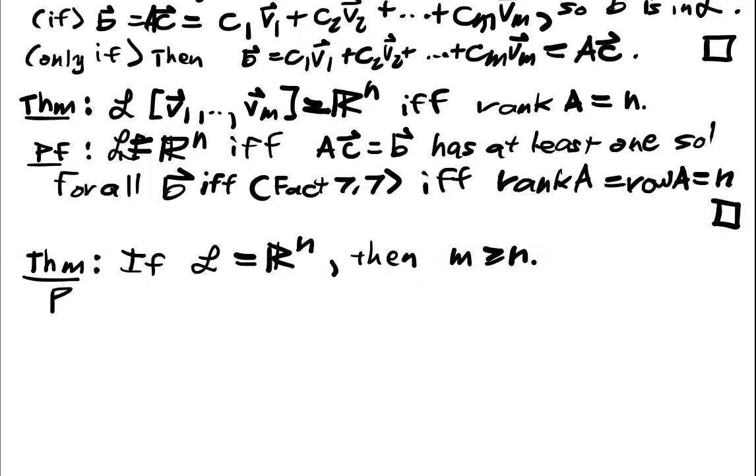And the proof is real simple. Well, N is equal to the rank of A by our theorem here. But this is less than or equal to the number of columns of A, which is equal to M. And therefore, we have this inequality. So we have to have at least N many guys to represent Rn.